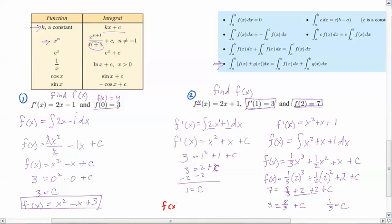Which means that my final equation would be f of x equals 1 third x cubed, or x cubed over 3, plus 1 half x squared, plus x, plus 1 third. And there you go. We have found out what c was, starting from the second derivative function. So, now you can start on your work.